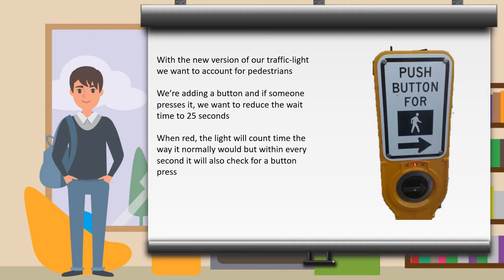It only works during a red light. Whenever someone presses the request-to-walk button, the waiting time reduces to 25 seconds. Now this only happens when the timer is already greater than 25 seconds. When red, the light will count time the way it normally would, but within every second it will also check for a button press.